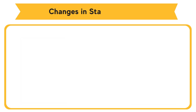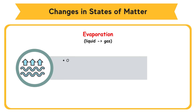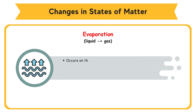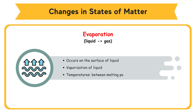Changes in States of Matter — Evaporation. Evaporation occurs on the surface of liquid, and it is a vaporization of liquid. Evaporation takes place at all temperatures between the melting point and boiling point.